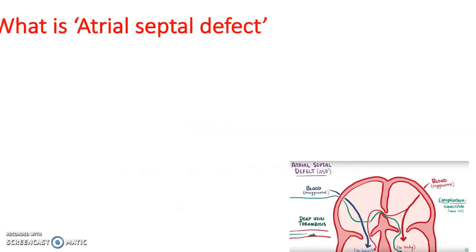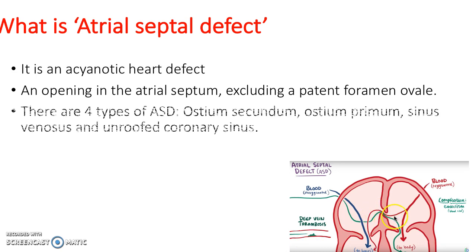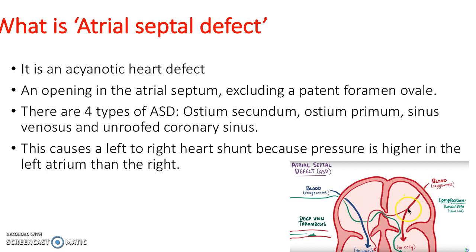What are ASDs? An ASD is an opening in the atrial septum, excluding a patent foramen ovale. It's an acyanotic heart defect because the blood pumps from the left to the right side, as the pressure is higher in the left atrium than in the right. There are four types of ASD: osteum secundum, osteum primum, sinus venosus, and unroofed coronary sinus.